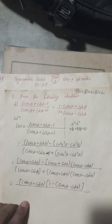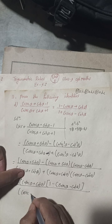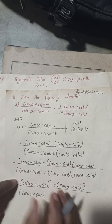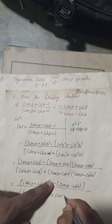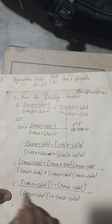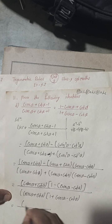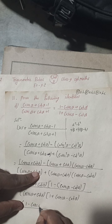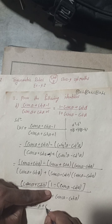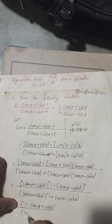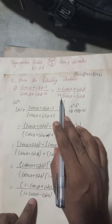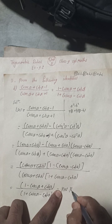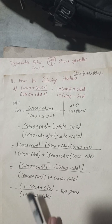On the denominator side, (cosec α + cot α) is again common. There is a plus, so we directly write (cosec α - cot α). Both (cosec α + cot α) terms cancel out. The remaining expression is (1 - cosec α + cot α) / (1 + cosec α - cot α), which equals RHS. Proved.